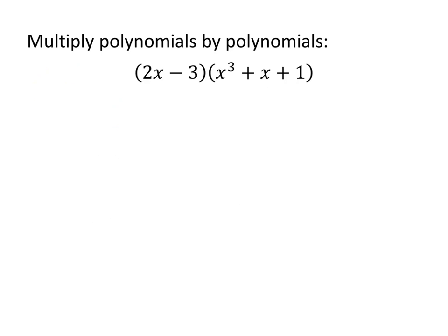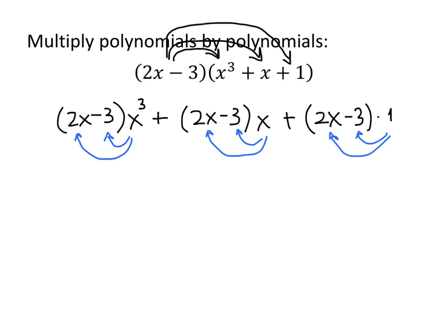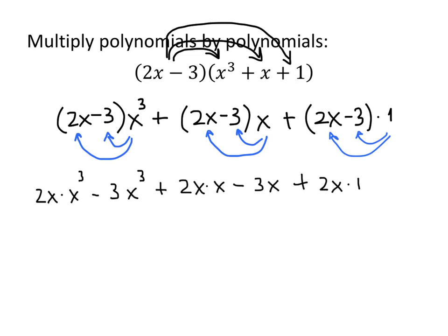Now, when we multiply a polynomial by a polynomial, all we do is distribute each term of the first polynomial through the terms of the second polynomial. So that means we've got 2x minus 3 times x cubed, plus 2x minus 3 times x, plus 2x minus 3 times 1. The first step is to distribute the first polynomial through the second polynomial, just like we did in the previous problem. But now we've got more distributing to do — we're going to distribute the x cubed times both of those terms, the x times both of those terms, and the 1 times both of those terms. So we get 2x times x cubed, minus 3 times x cubed, plus 2x times x, minus 3 times x, plus 2x times 1, minus 3 times 1.